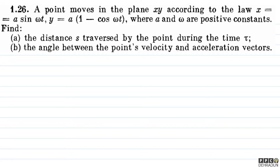The question says: a point moves in the xy plane according to the law x = a·sin(ωt), y = a·(1 - cos(ωt)), where a and ω are positive constants. Find the distance traversed by the particle during time τ, and the second part is the angle between the point's velocity and acceleration vectors.